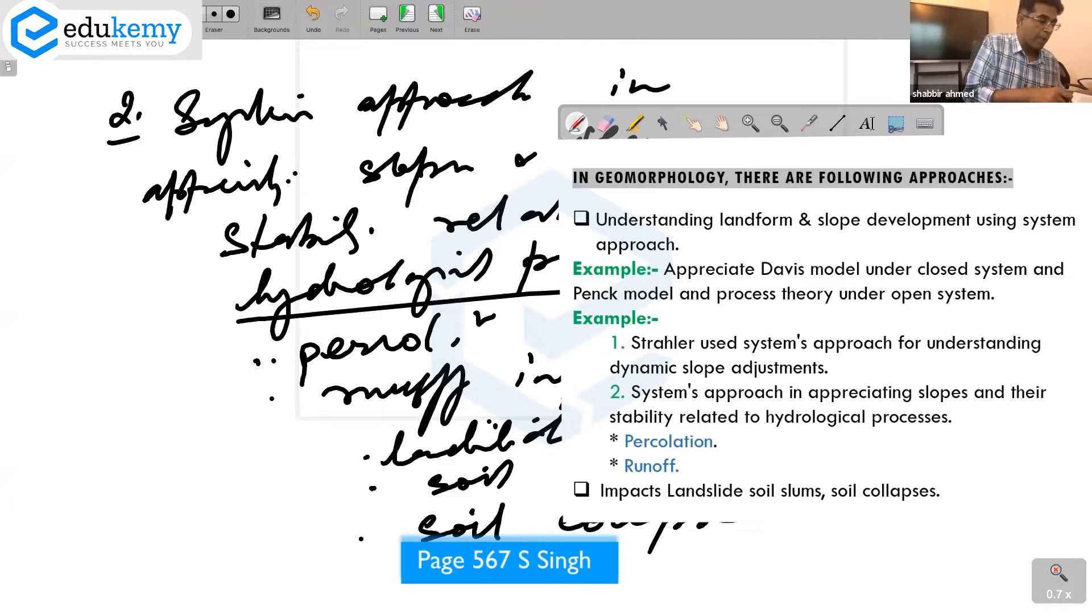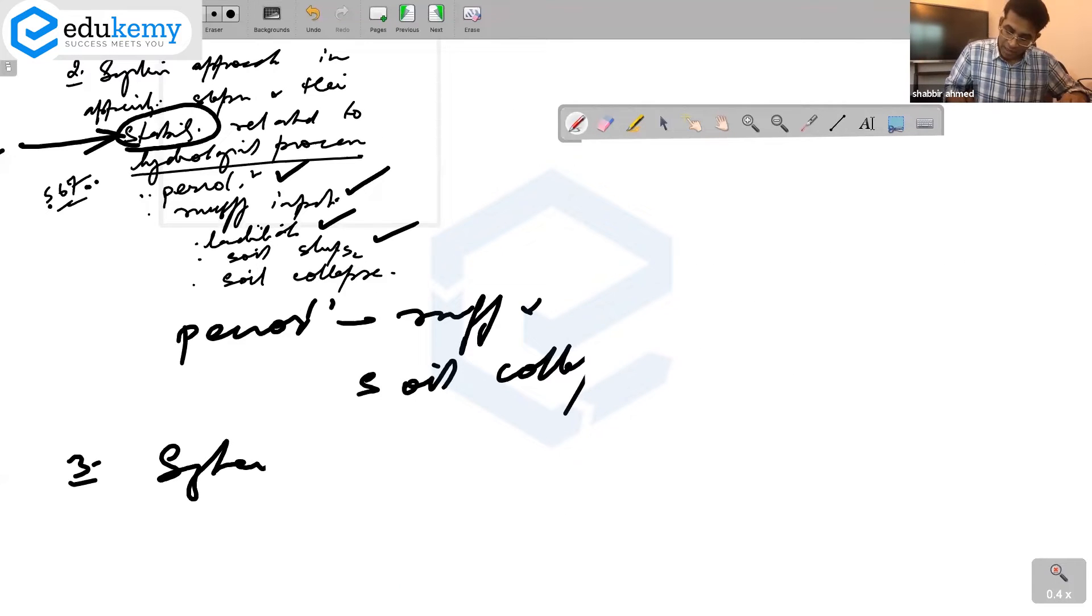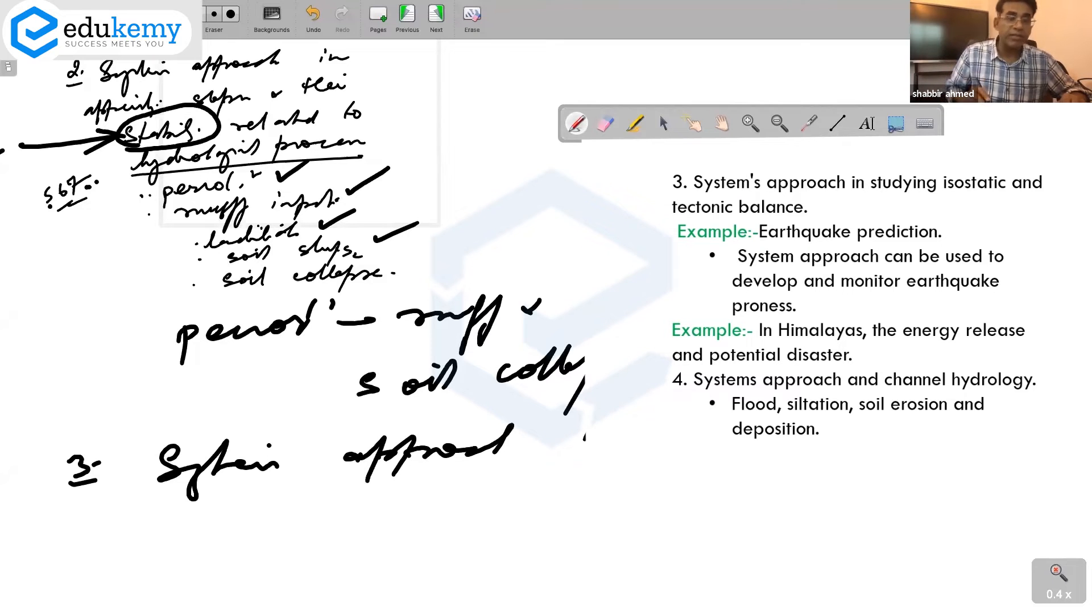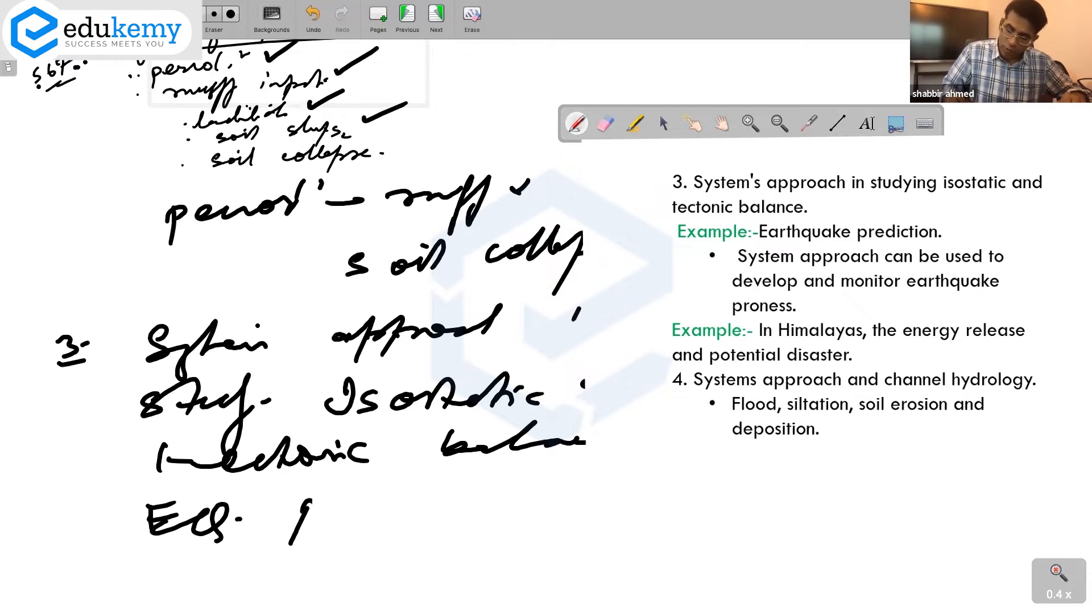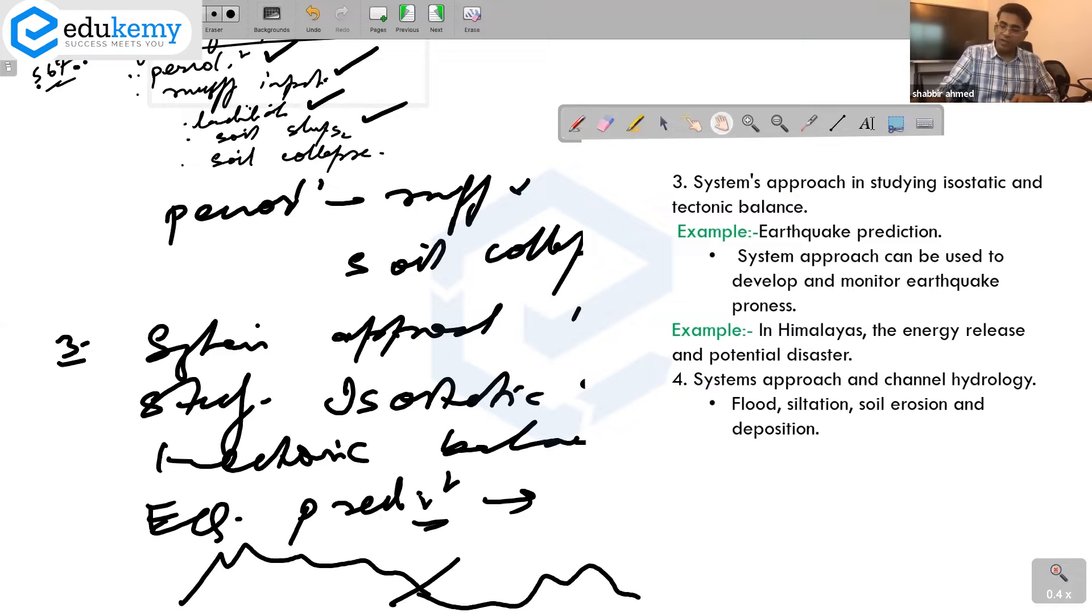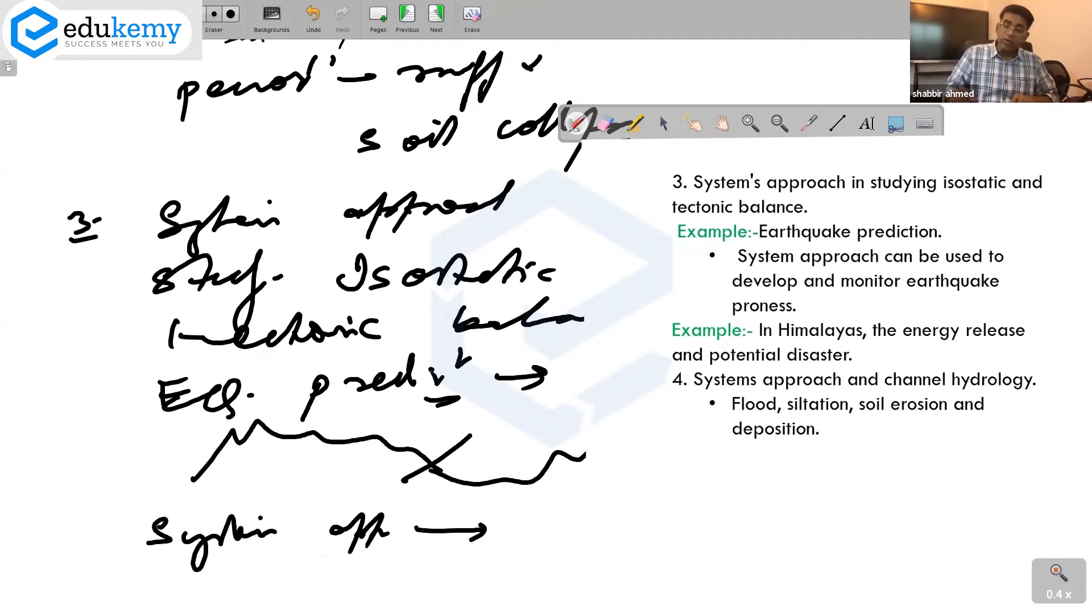For this one I'll suggest you could use one diagram, page number 567. The third is systems approach in studying isostatic and tectonic balances. Have you heard about earthquake prediction? We talk about how the area is related by the process of tectonics - mountains, valleys, cracks, rift valleys. Systems approach can be used to develop and monitor earthquake proneness.